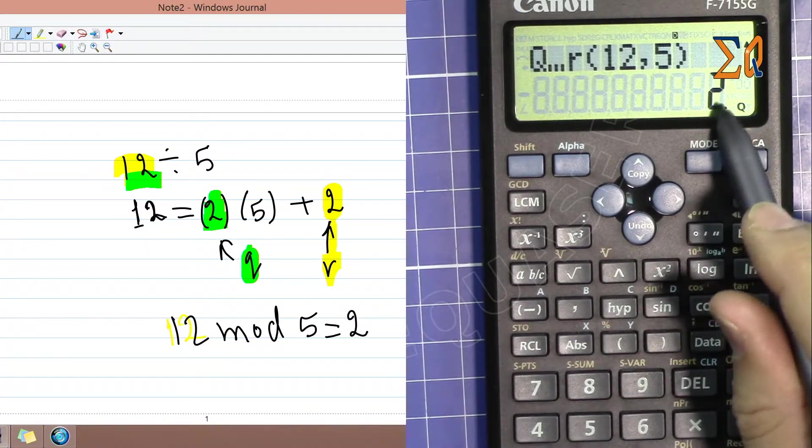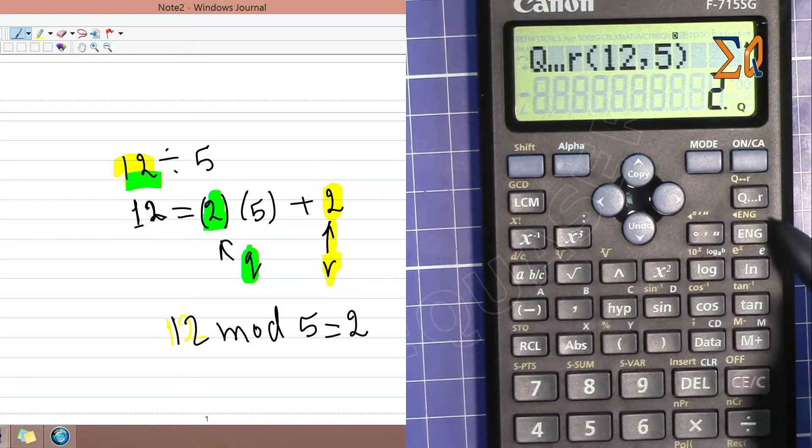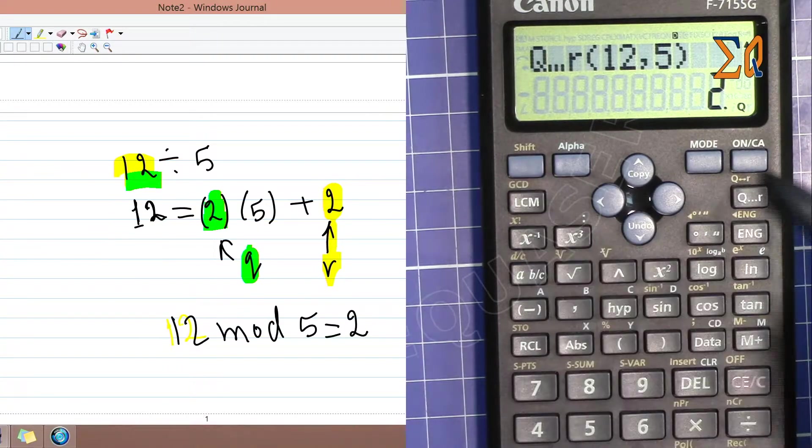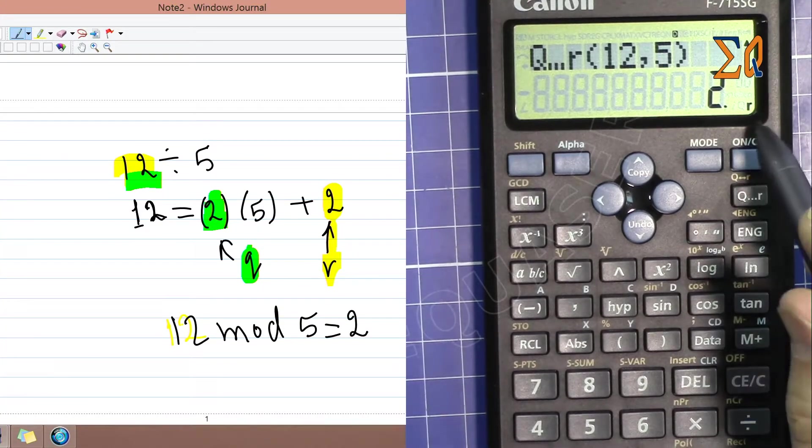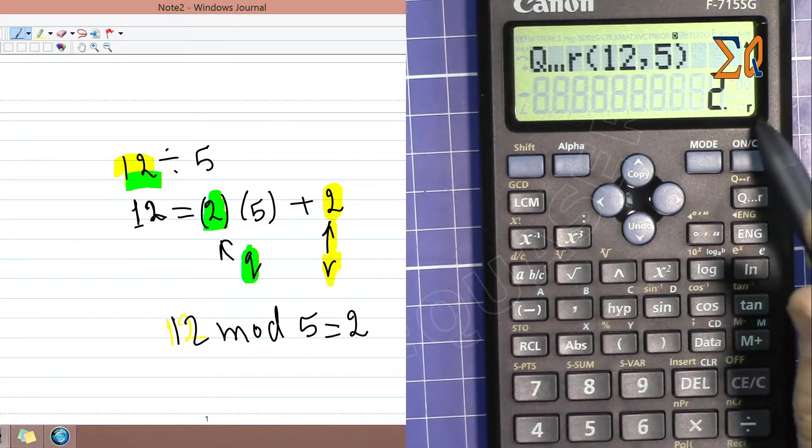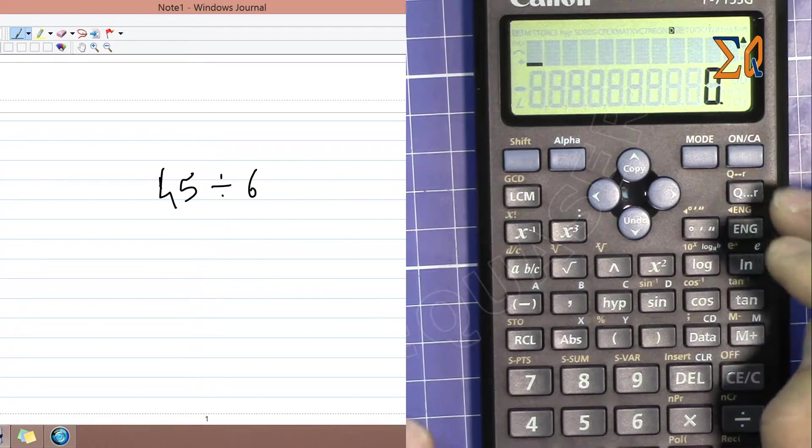To get the remainder, press Shift with QR. Now it shows the remainder is also 2. Let's find the quotient and remainder of another example: 45 comma 6, close it. The quotient is 7.